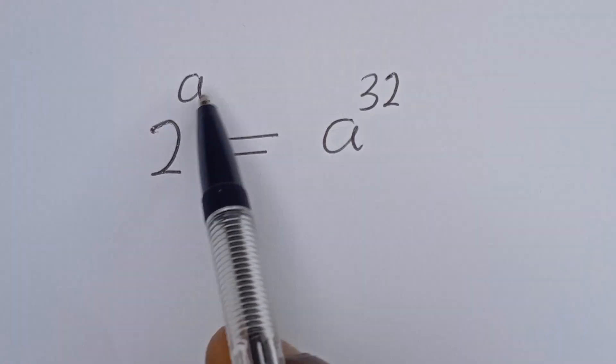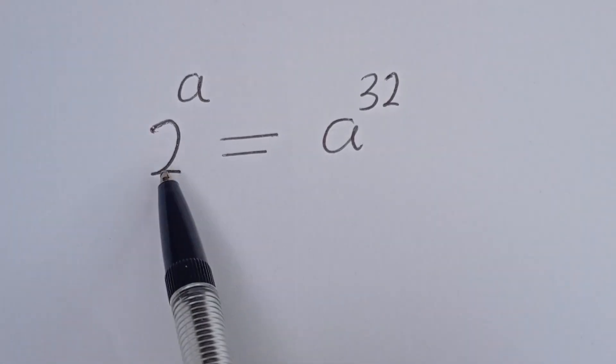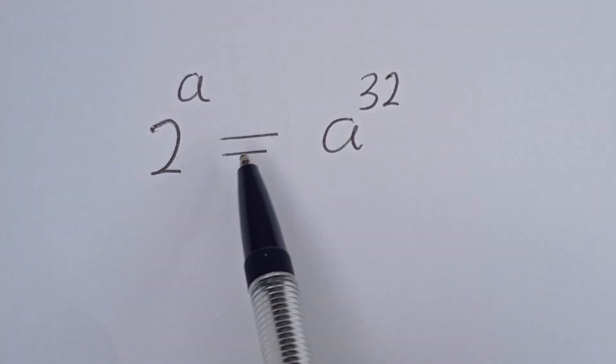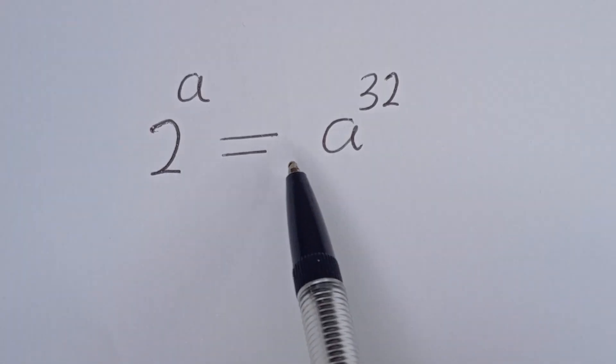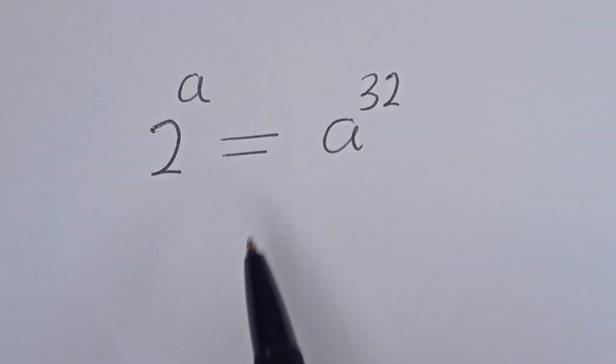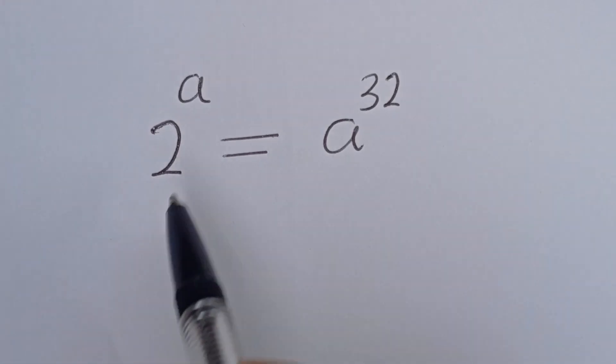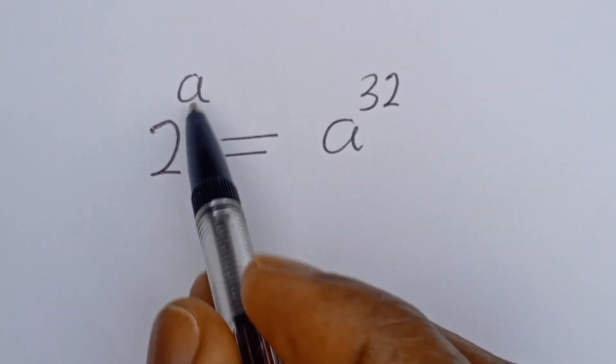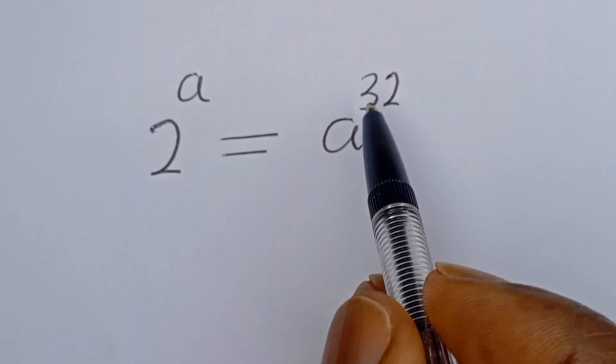Hello. How to solve for a in this equation: 2 to the power of a is equal to a to the power of 32.